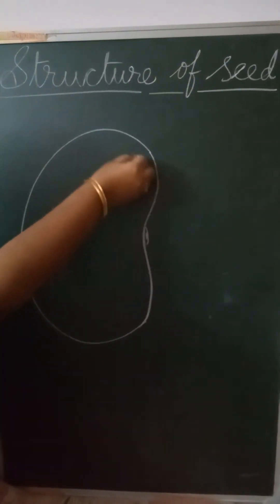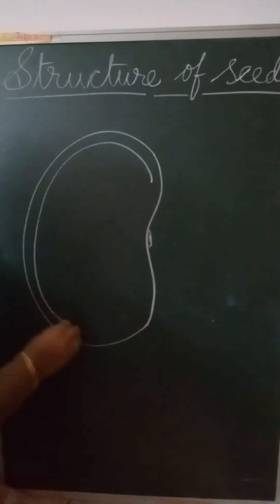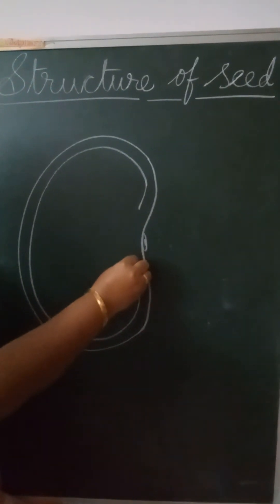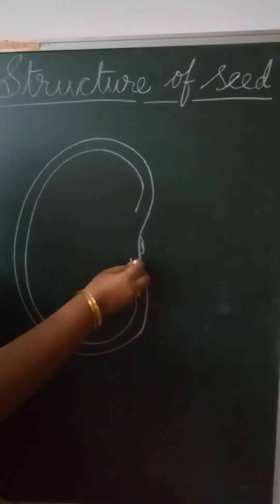It has two cotyledons inside it. So I am drawing the cotyledons now. Only one we can show in the diagram. The other one we cannot draw it.